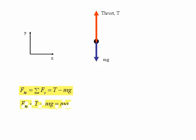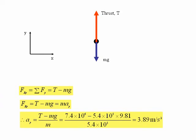From Newton's second law, we put that resultant force into the equation F equals ma, so Fy is equal to T minus mg, which equals ma_y. Transposing that equation, we get a_y is equal to T minus mg over m. And then we just put in the numerical values for the force T and for the mass m, which gives us the answer of 3.89 m per second squared.